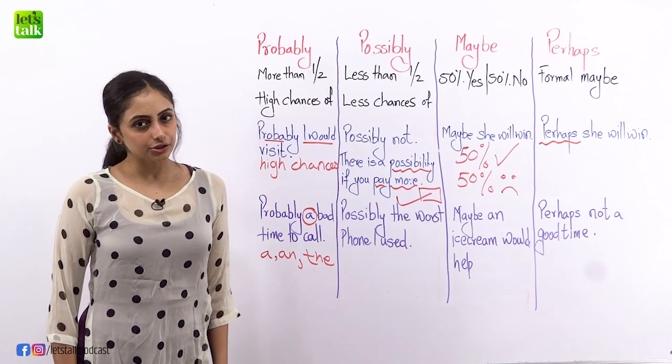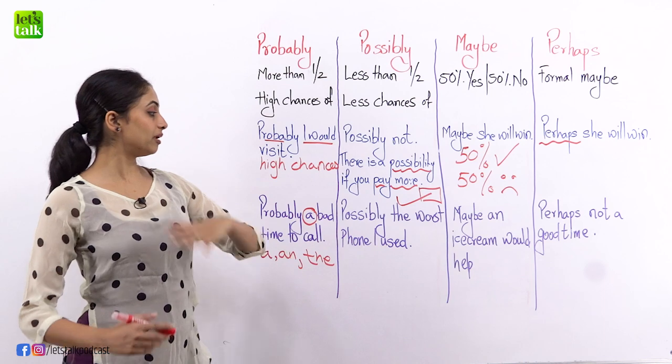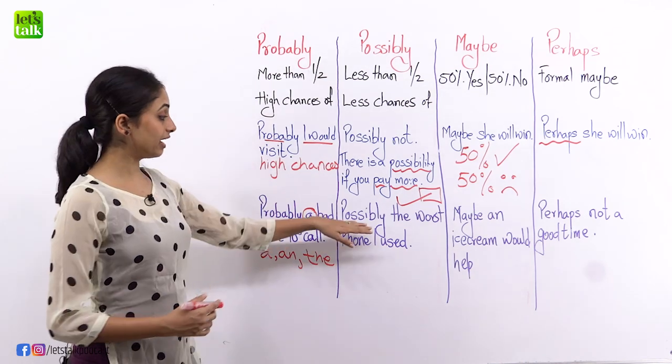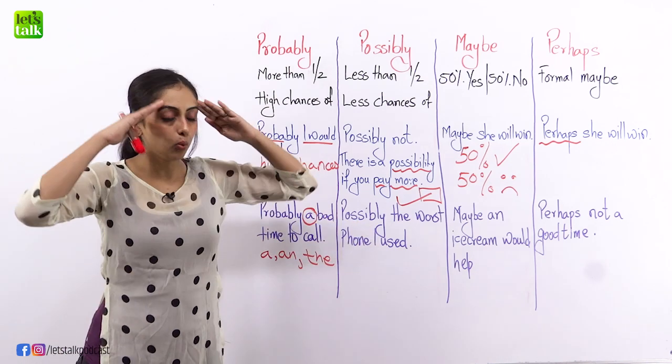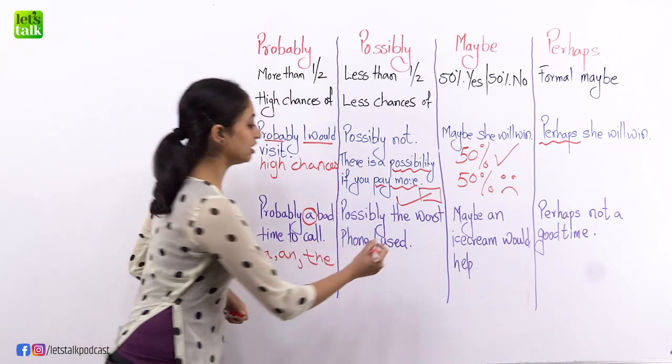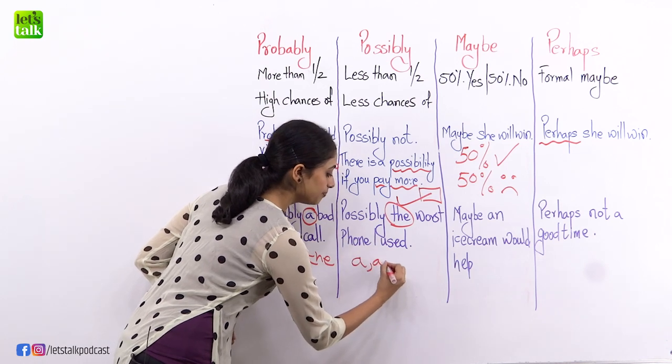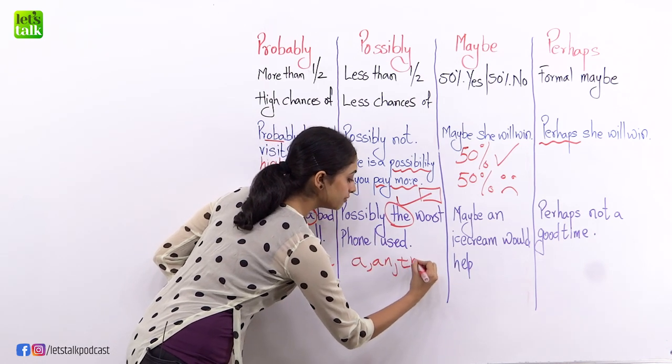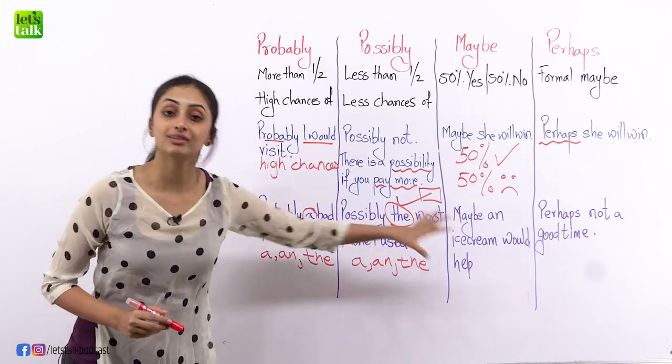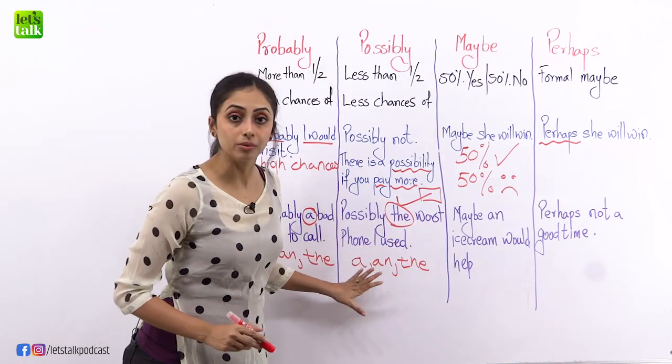Possibly, do you like this phone that you have bought? Maybe you have bought a new phone, right? And I'm replying or I'm giving my advice or suggestion or feedback to a friend and I say, possibly the worst phone I have ever used. Here I have again used the article, the. Here as well I can use a, an, or the after these words, after the word possibly. A bad time, the worst phone.